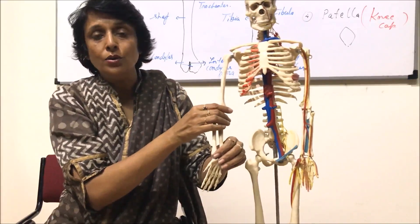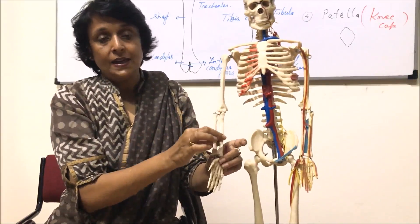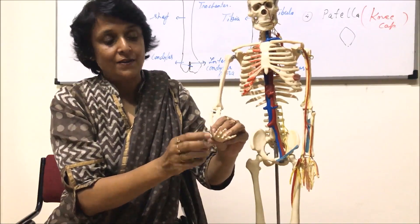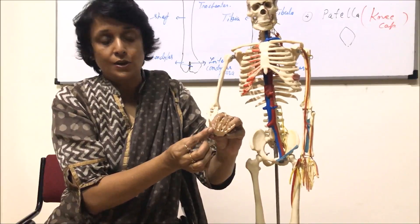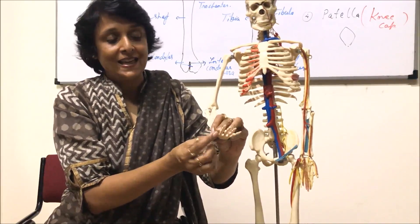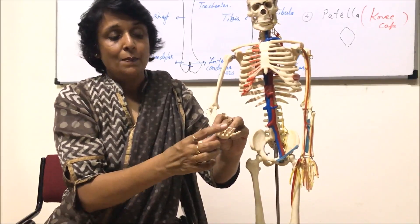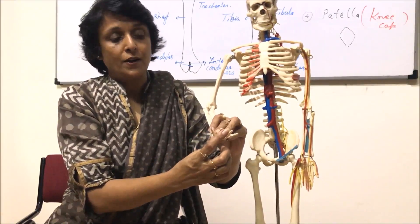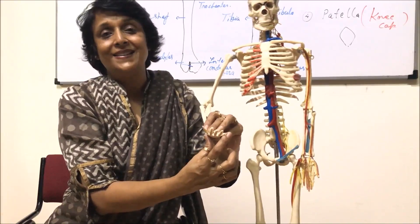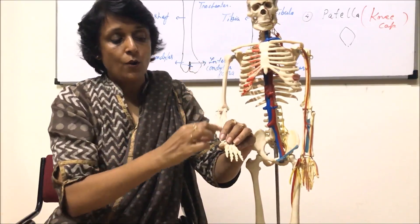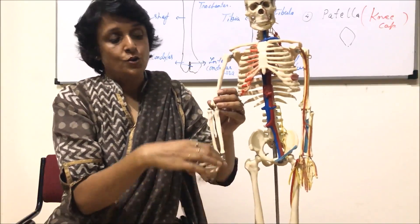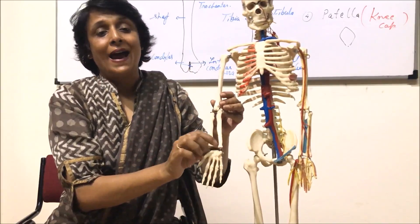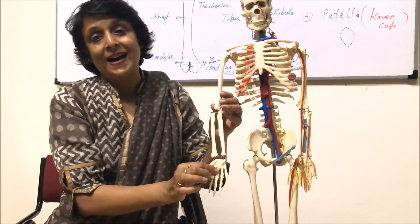Counting the bones: three phalanges per finger region, eight carpals, five metacarpals, and fourteen phalanges total — that gives us 30 bones in one arm. So two arms would have thirty bones each. This is how the bones of our hands or forelimbs are arranged.